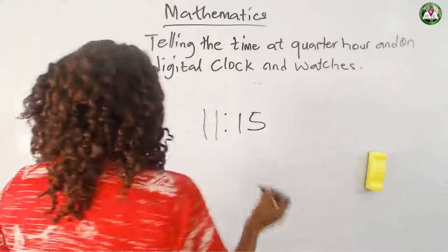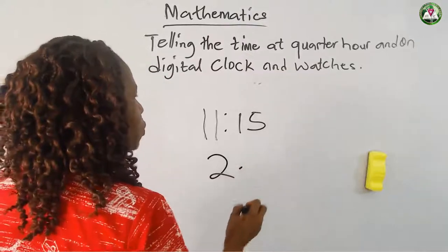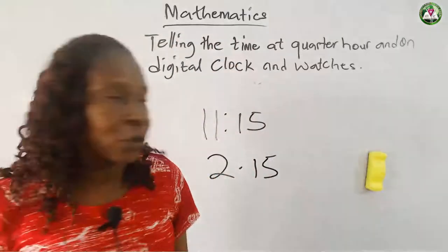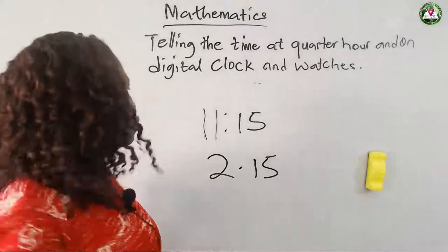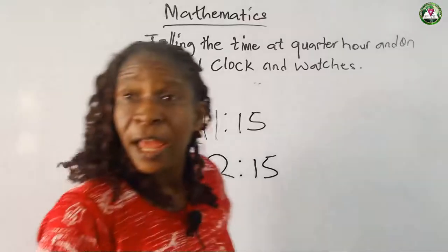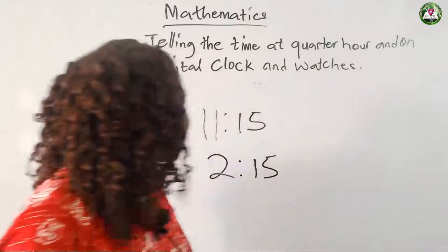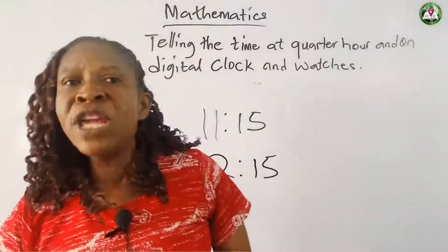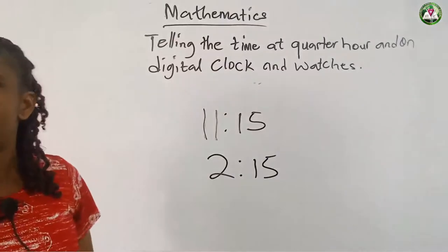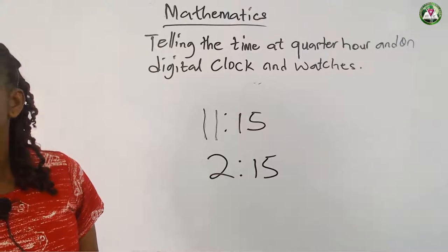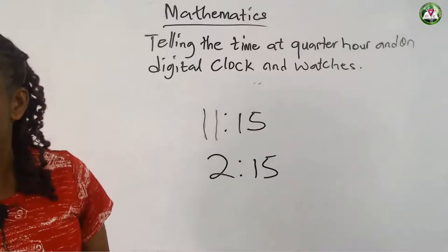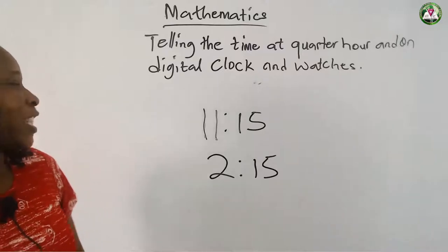You may also have something like two fifteen. What is the time if you see two fifteen on your digital clock? Correct — fifteen minutes past two. When you don't want to say it is fifteen minutes past two, you say quarter past two.